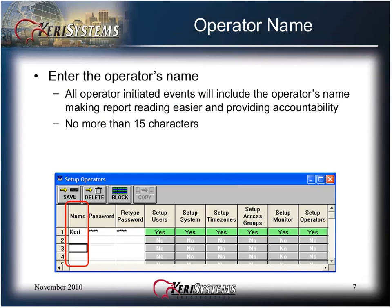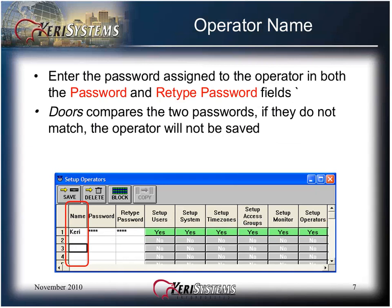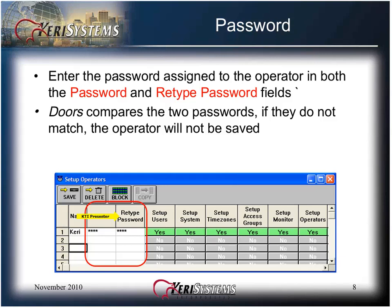Enter the operator's name. All operator initiated events will include the operator's name, making report reading easier and providing accountability. The name should be no more than 15 characters. Enter the password assigned to the operator in both the password and retype password fields — again, no more than 15 characters. Each character appears as an asterisk, so please type carefully.